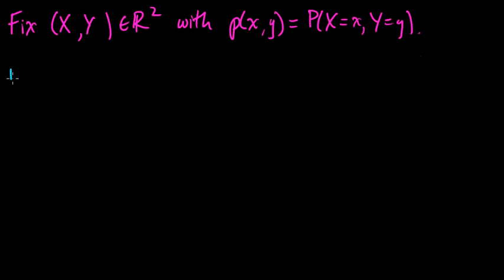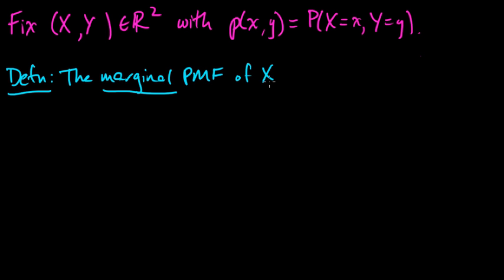And now we have the definition. So the marginal PMF, or sometimes we say marginal distribution, of X for this random vector is P subscript X of x, and it equals just the probability that X takes that little x value. So it's called the marginal because we have other random variables floating around. And similarly, the marginal of Y would be P_Y(y) equals probability that Y takes a particular value.